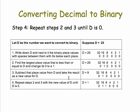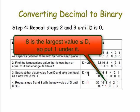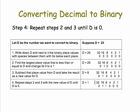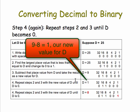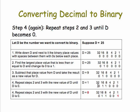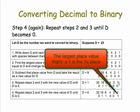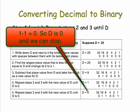Step four: repeat steps two and three until we get a value of zero for d. In this case, the largest value that's less than or equal to d, which is now 9, is 8. So I'm going to put a 1 under the 8, and then subtract 8 from 9, giving a new value of d of 1. Repeating again: the largest place value less than or equal to d is 1, so I put a 1 under it, and subtract 1 from d — now d is 0. Therefore, we can stop.